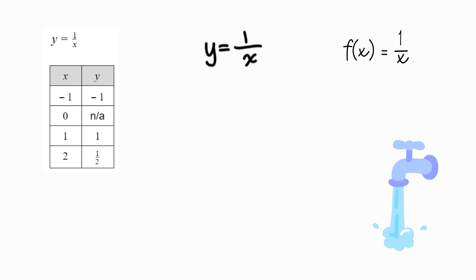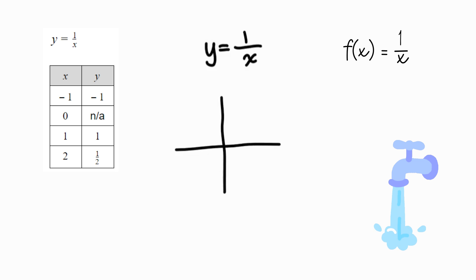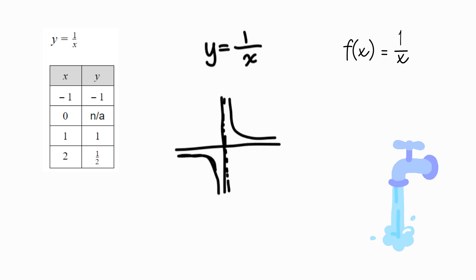This type of function is called a rational function. The variable is in the denominator, and there will be a restriction on it — x cannot equal 0. Therefore, there is an asymptote at 0. There are two pieces to the graph of this function because there is also a horizontal asymptote at 0. The pieces will be here and here, and the graph of this function will look roughly like this.